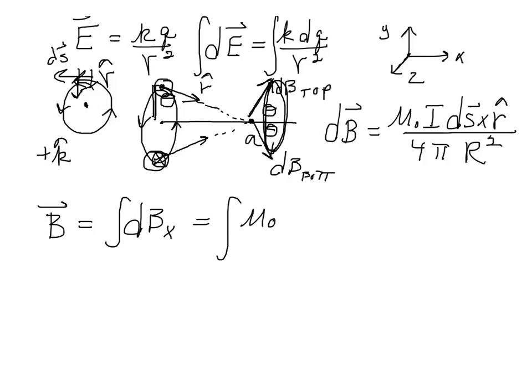So any dB is mu naught i. The ds cross r hat, it's hard to convince you in two dimensions, but the ds and the r hat for all these situations are perpendicular to each other. Recalling the cross product, ds cross r hat means the magnitude of ds times the magnitude of r hat, which is 1, a unit vector, times the sine of the angle, in this case 90 degrees. So the ds cross r hat reduces to just ds,